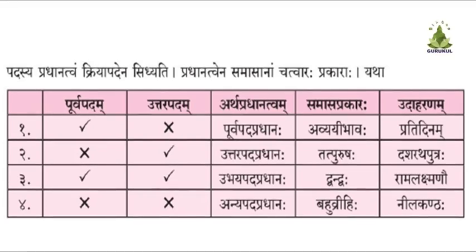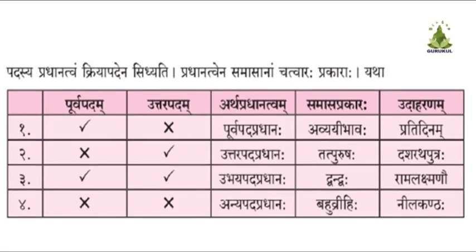Tath Purush Samasah is Uttar Pat Pradhanah. The meaning of the Uttar Pat is primary in Tath Purush Samasah. The gender (Lingam) and number (Vachanam) of the entire Samasah are decided by the Lingam and Vachanam of the Uttar Pat.